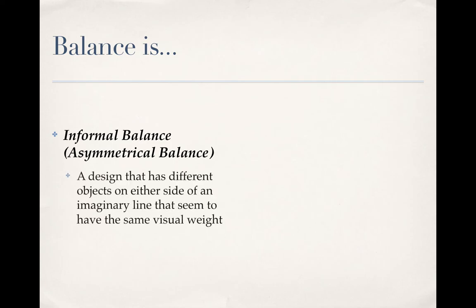Lastly, we have informal or asymmetrical balance. This is when a photograph or design has different objects on either side of the center line, but there appears to be a balancing out between positive and negative space, or it can be two different objects that seem to have a similar visual weight. An easy way to look at this in photography is the photograph looks unbalanced.